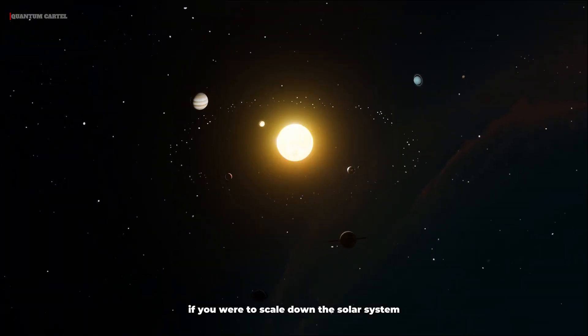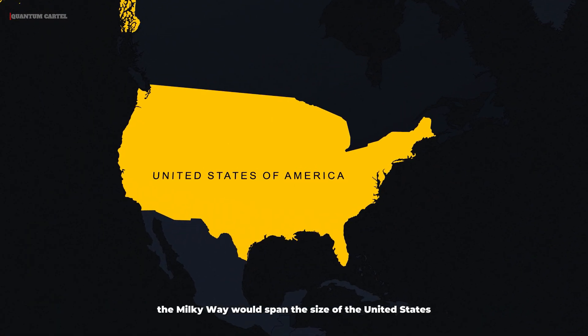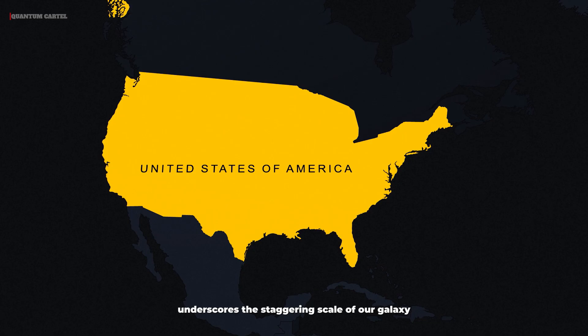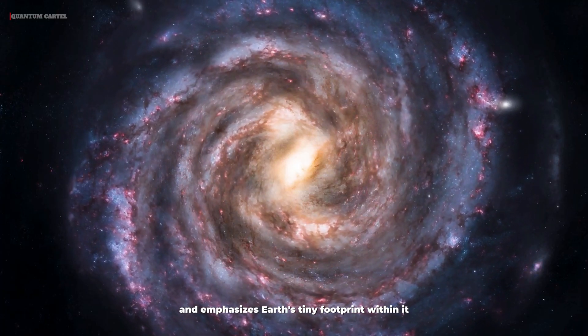If you were to scale down the solar system to the size of a quarter, the Milky Way would span the size of the United States. This analogy underscores the staggering scale of our galaxy and emphasizes Earth's tiny footprint within it.